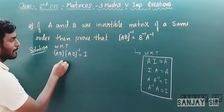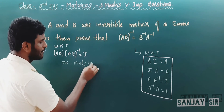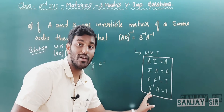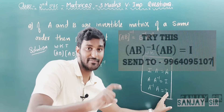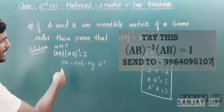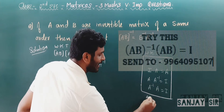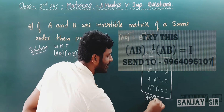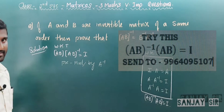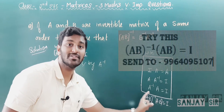Pre-multiply by A⁻¹. We can also try: (AB)⁻¹ · AB = I, and follow that method as well. Both are similar methods.